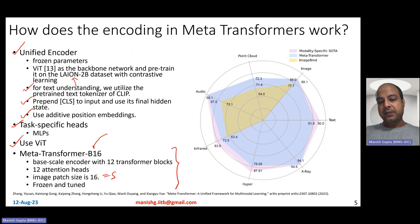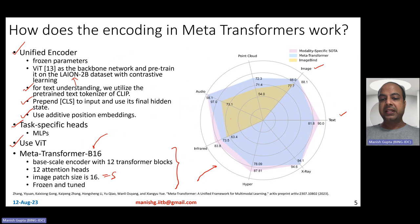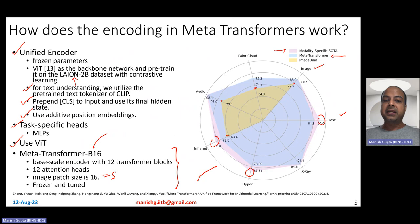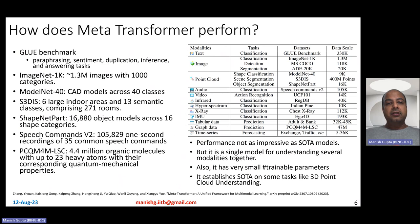Looking at broad results: when comparing MetaTransformer (shown in blue) against ImageBind (shown in yellow) across infrared images, audio, point clouds, and standard images, MetaTransformer outperforms ImageBind. Modality-specific state-of-the-art models still get better results in several cases, but MetaTransformer provides reasonable results and importantly works across all modalities.